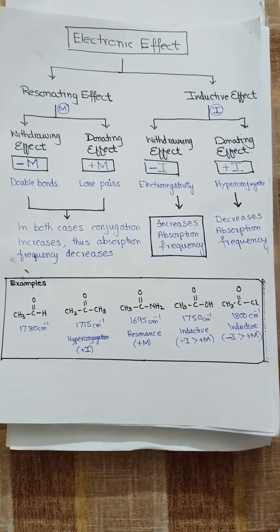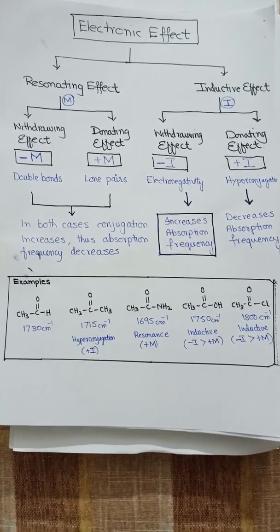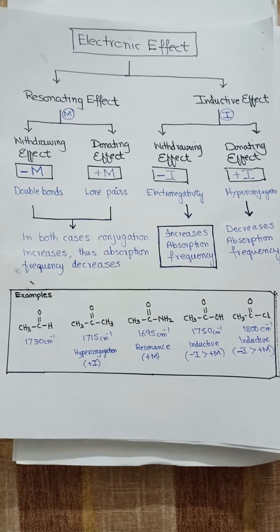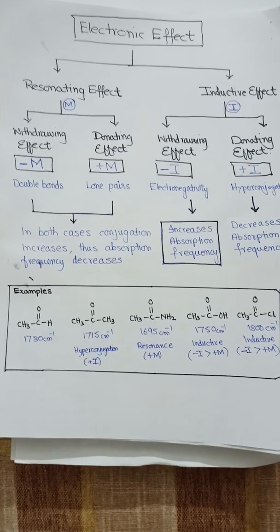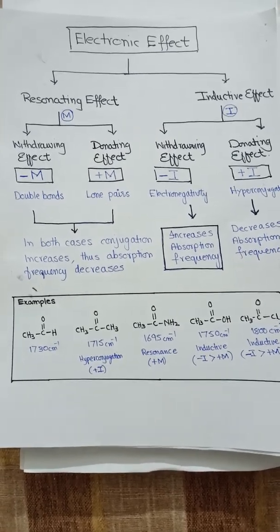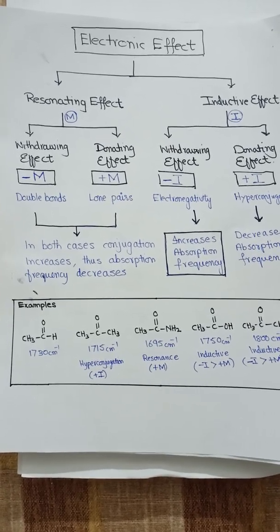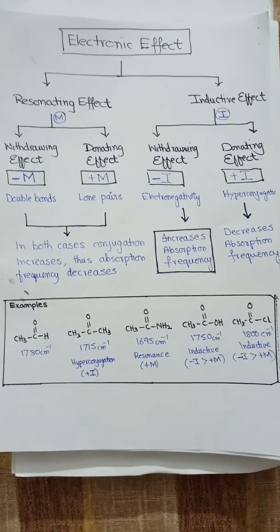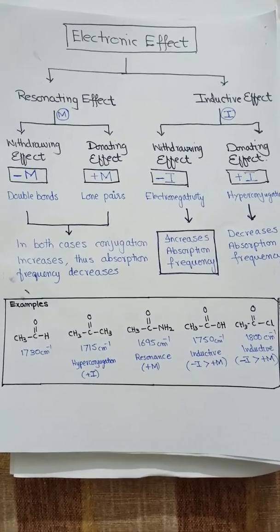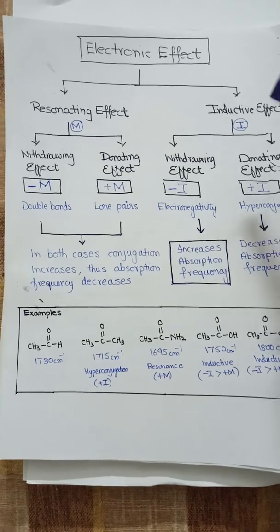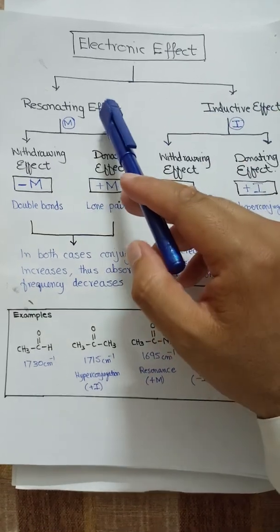Dear students, Assalamualaikum. In our previous videos we were studying about IR spectroscopy. In the previous video we studied Hooke's law and the different factors that affect IR spectroscopy, and we discussed in detail the electronic effect that affects IR absorption frequency. Here we are going to summarize it and then discuss some other factors that also affect absorption frequencies. The first effect is the electronic effect.